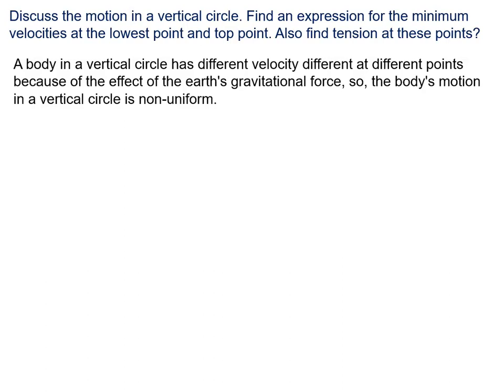Because of the effect of the Earth's gravity, when the body goes downward, the velocity increases in magnitude. The reason is that gravity acts downward and supports the motion. So the body's motion in a vertical circle is non-uniform.